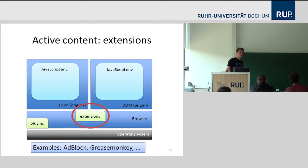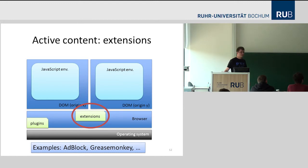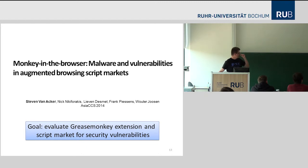The second type of active content I want to talk about is extensions. Just like plugins, an extension is something you plug into your browser that can interact with both the user and web pages. The difference is that extensions are closer to web pages and farther from the operating system. Examples include Adblock and Greasemonkey. This is based on work we published about two months ago in Japan — the paper is called Monkey in the Browser — and the goal was to evaluate the Greasemonkey extension and its script market, userscripts.org, for security vulnerabilities.